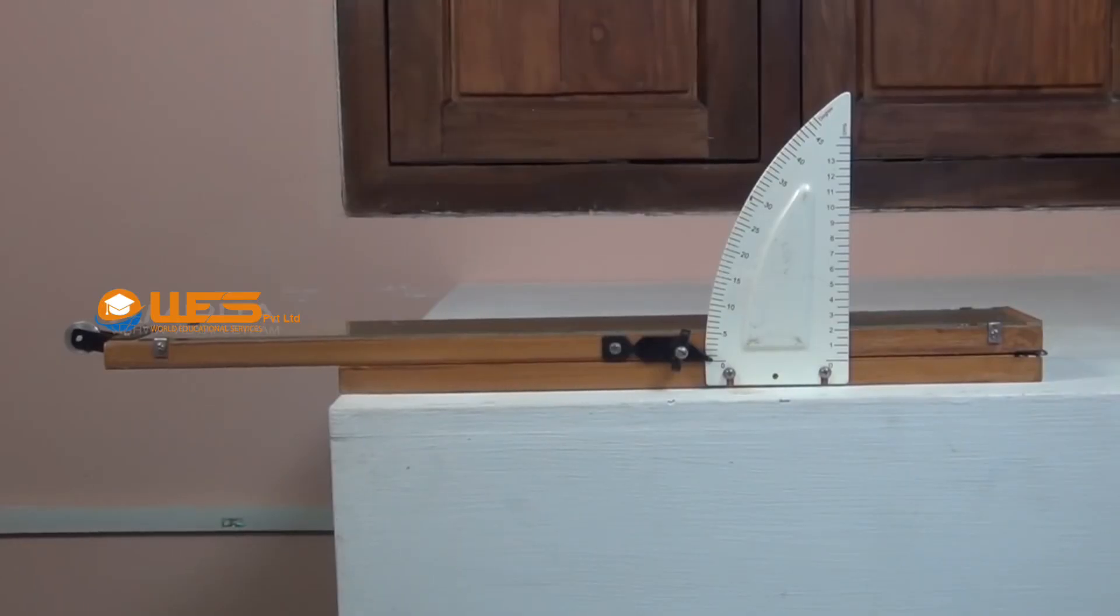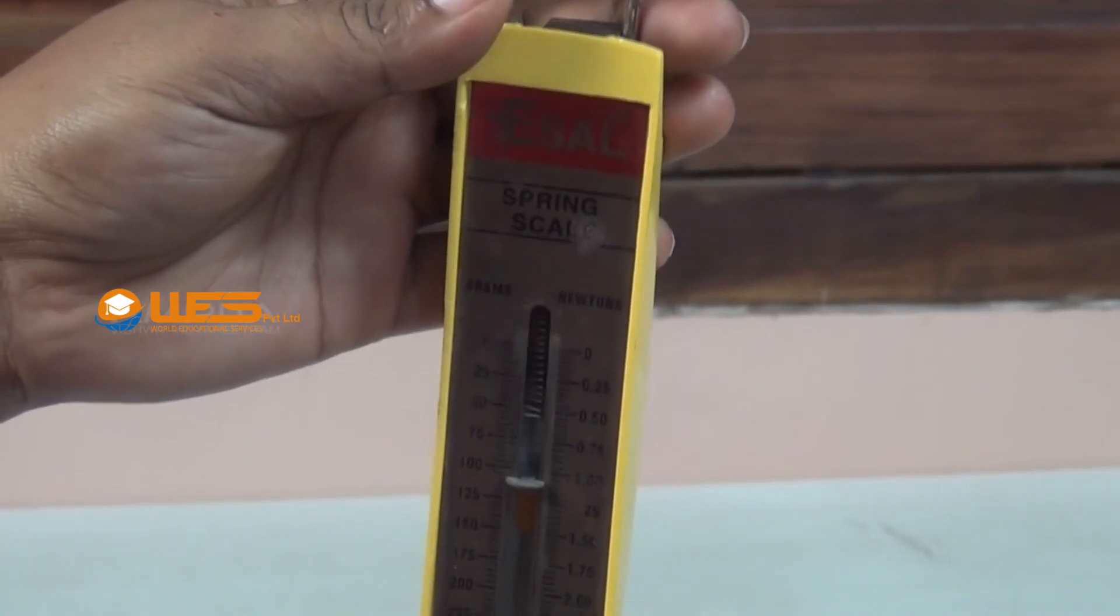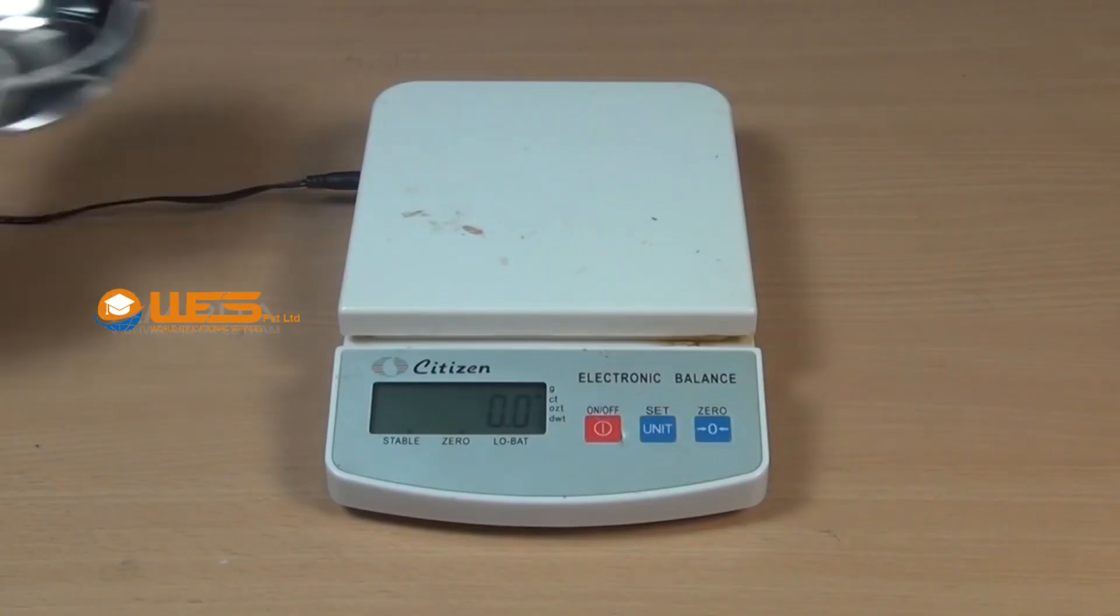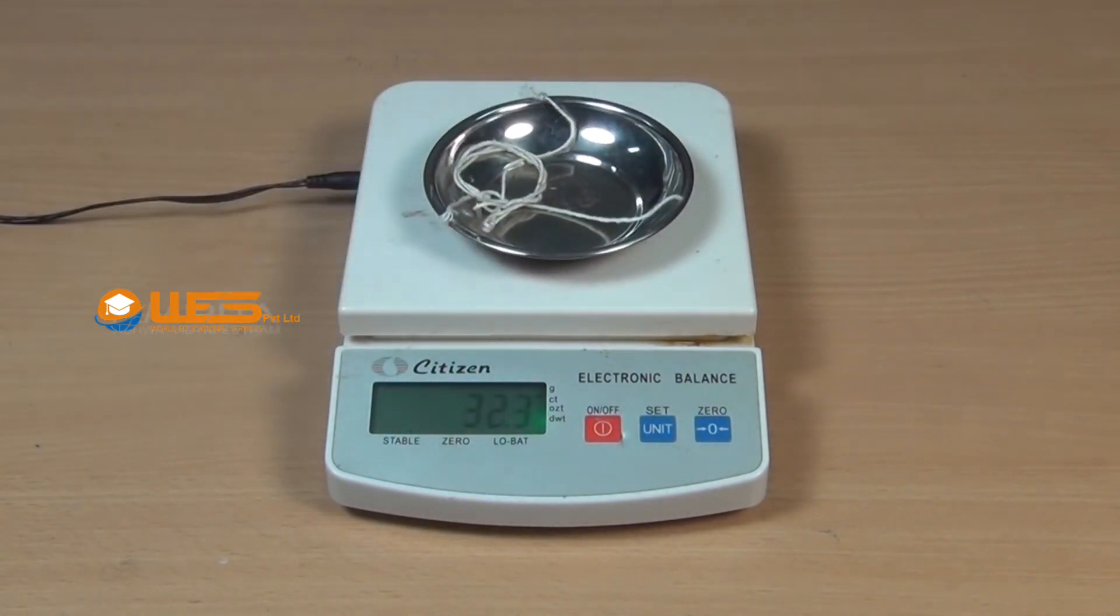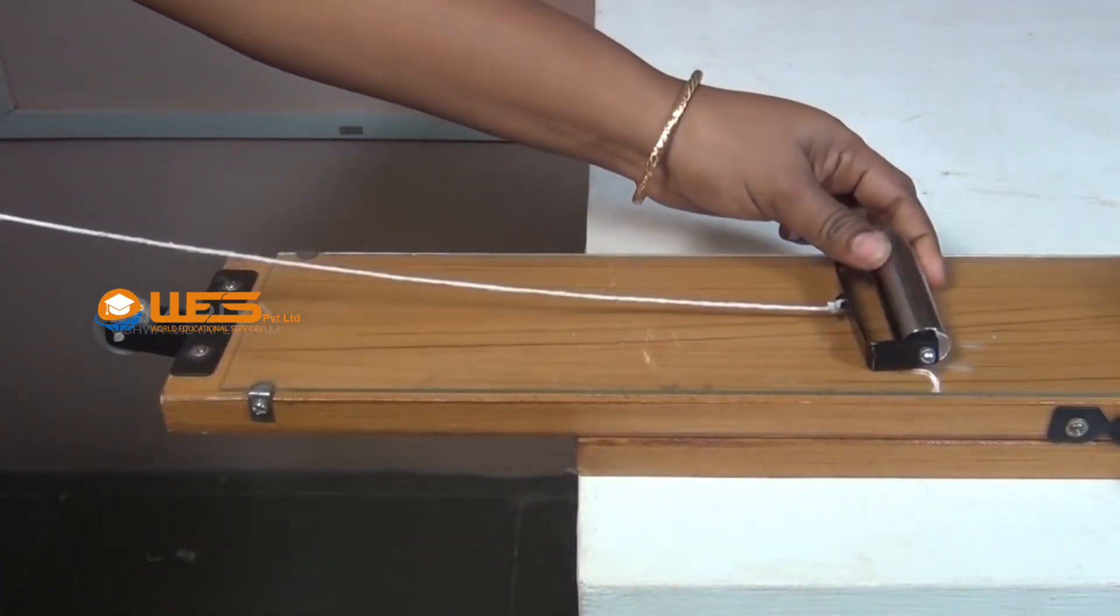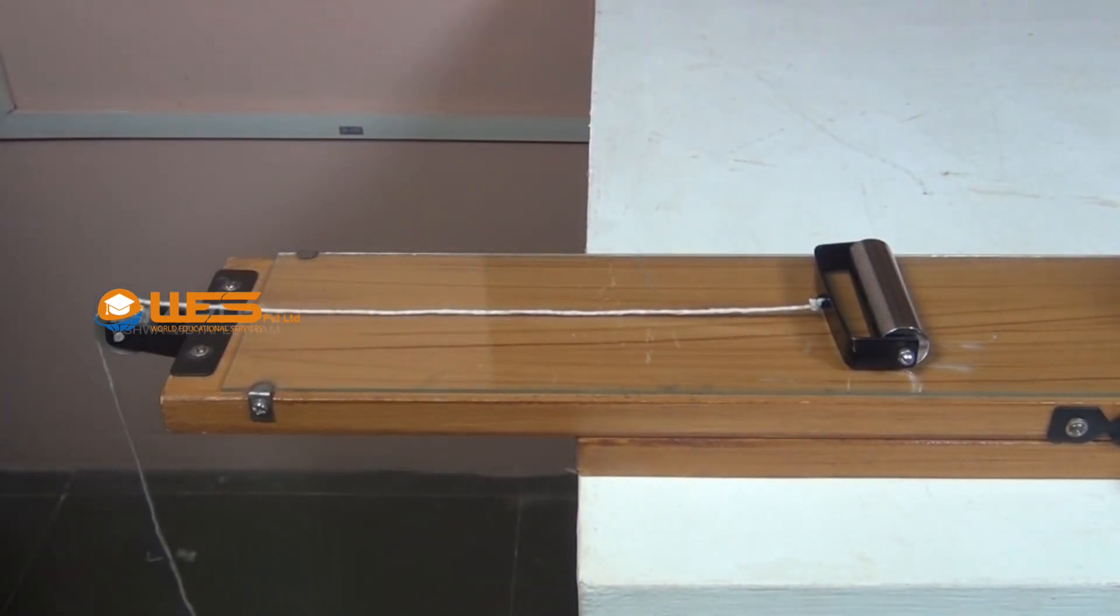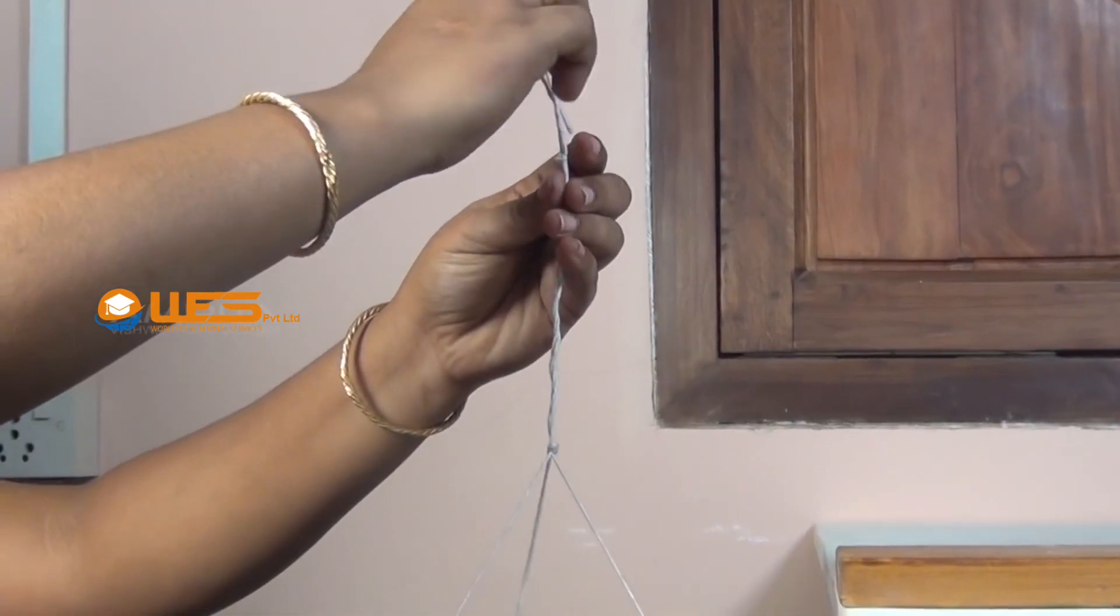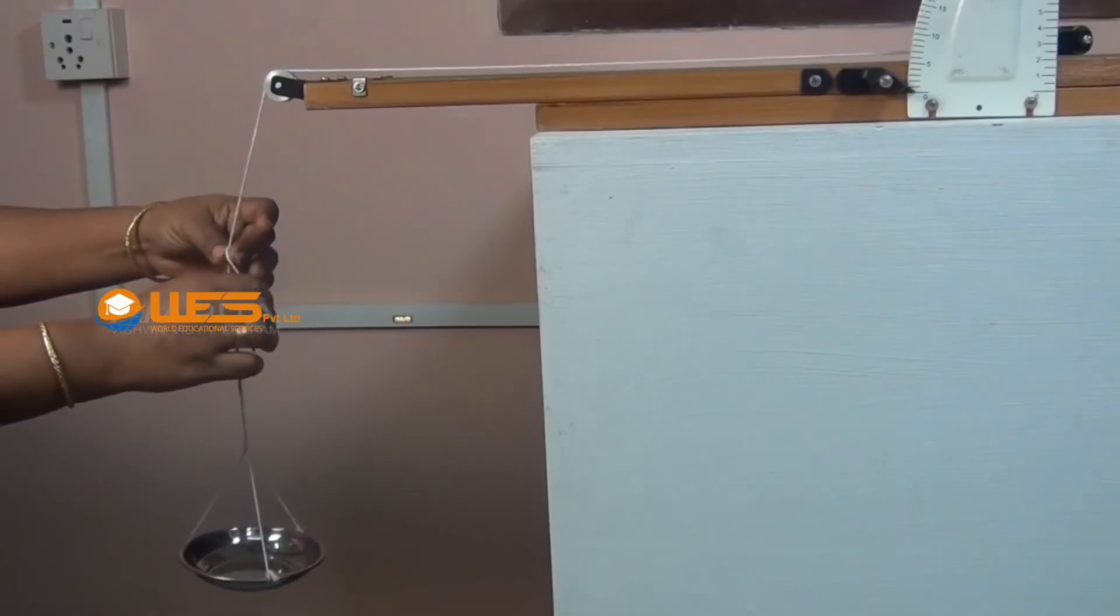Procedure: Keep the apparatus on the table horizontally in such a way that the angle of inclination is zero. Find the mass m of the roller using a string balance and the pan using a digital balance. Tie one end of a thread to the roller. It is then placed in the middle of the inclined plane and passed over the pulley.